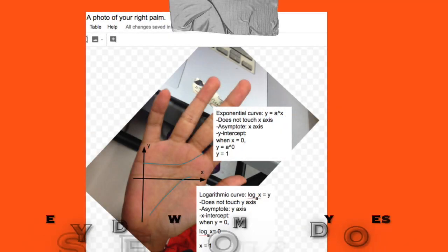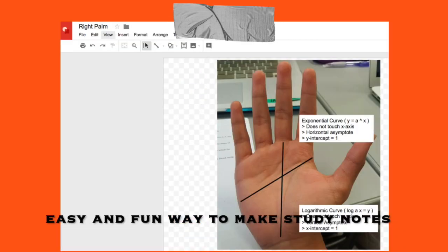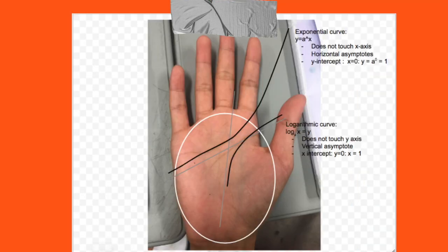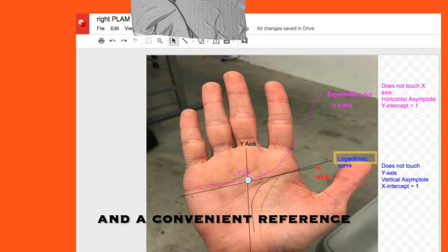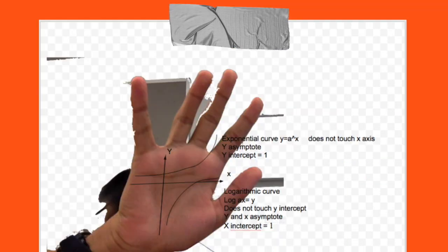But what I would encourage you to do is to create a whole series of study notes based on the lines that you've seen with the properly labelled intercepts, asymptotes and shapes.